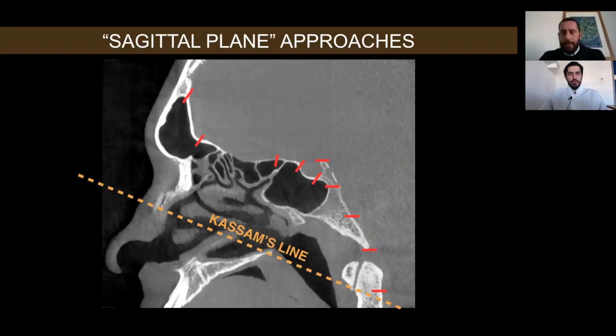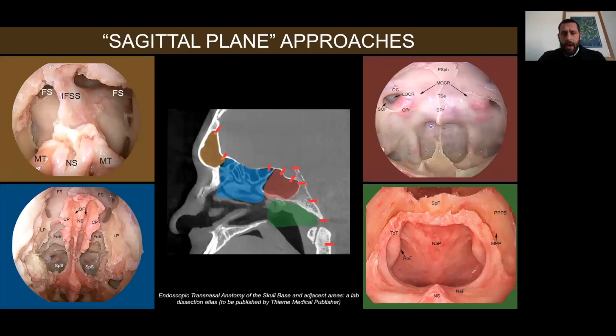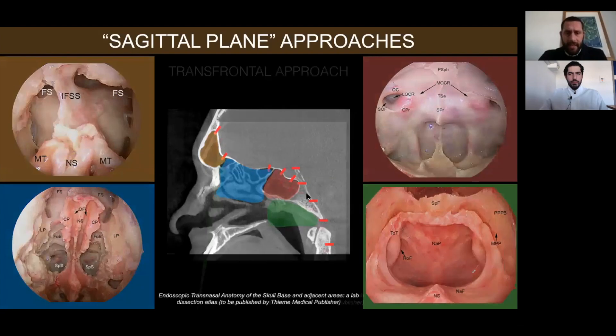The first part of this presentation will be focused on the sagittal plane approaches, starting from anterior — from the posterior plate of the frontal sinus to the craniocervical junction. All these different approaches allow us to pass through the nose and reach different areas of the ventral skull base.